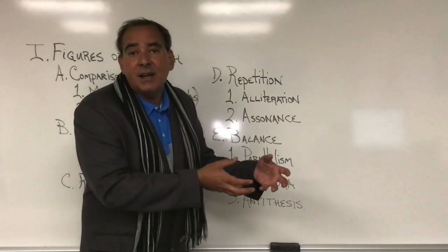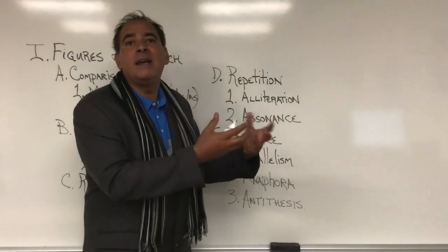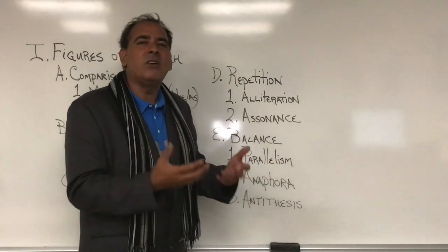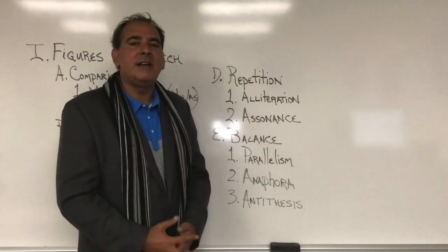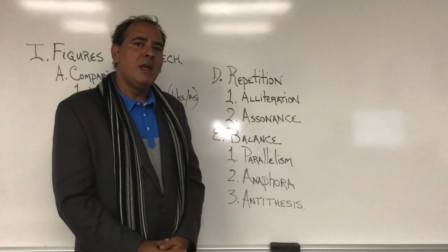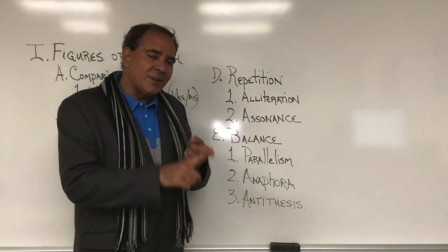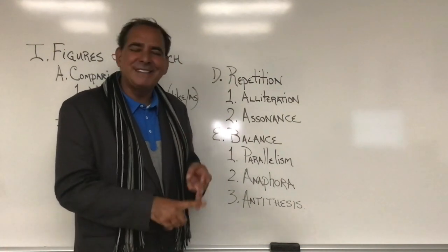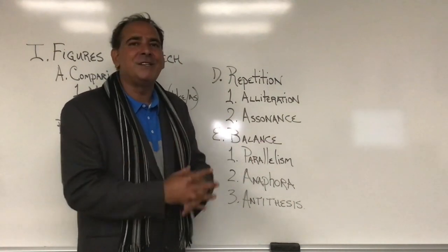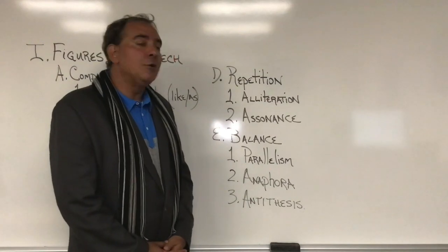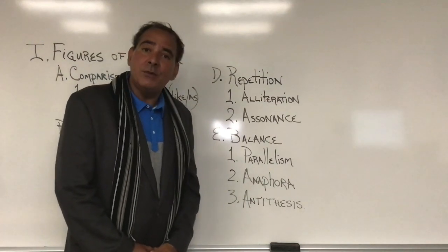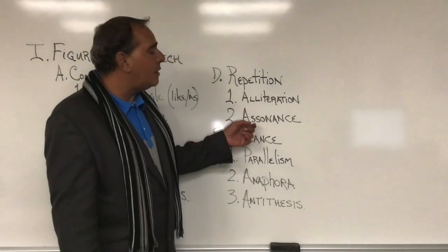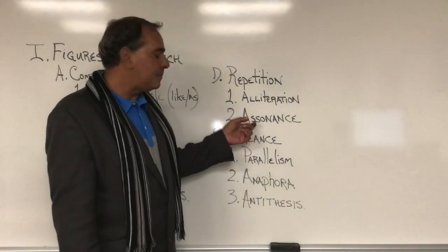And then finally, you can talk about the product — the final incandescent light bulb that we see so much around in today's day and age. So you've got the person, the process, and the product. If you repeat a vowel sound over and over again, you have what we call assonance.